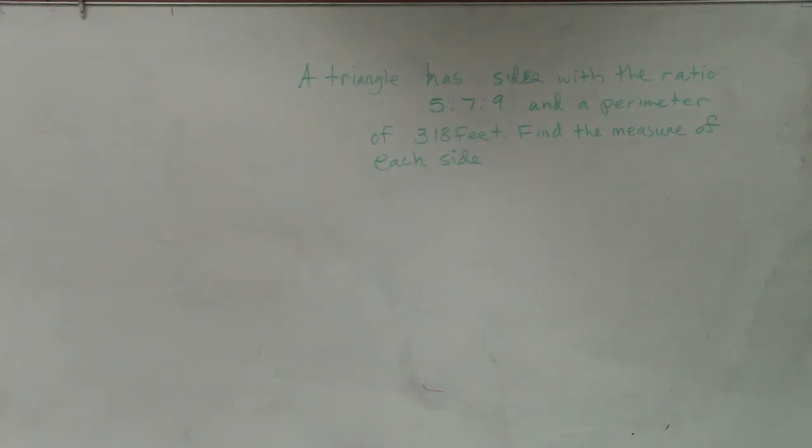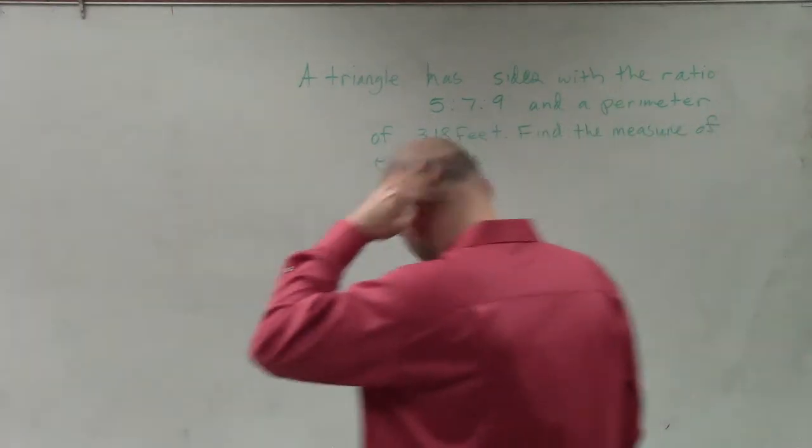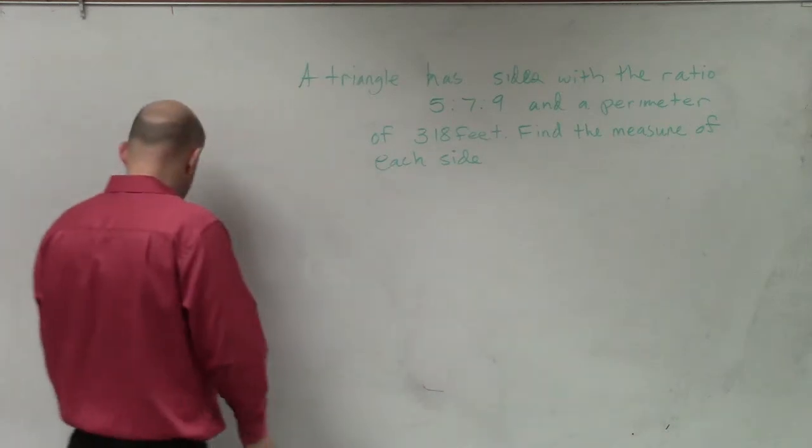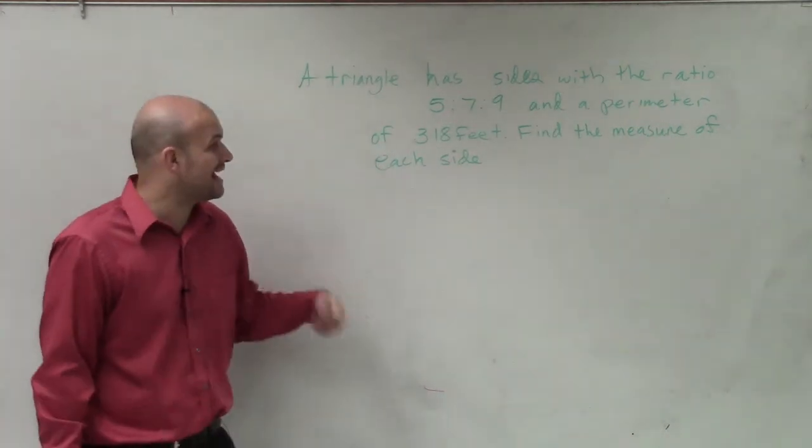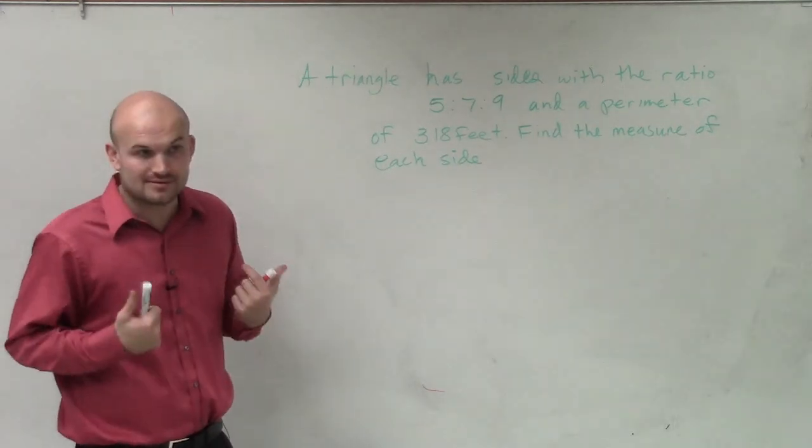So in this example, you can see, we have a triangle of sides with a ratio of 5, 7, and 9, and a perimeter of 318 feet. Alright?